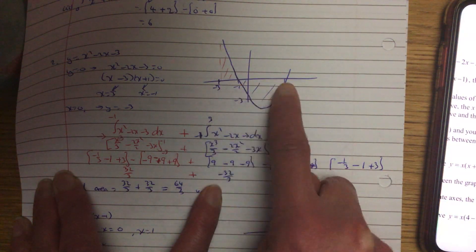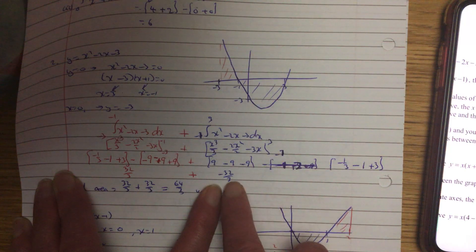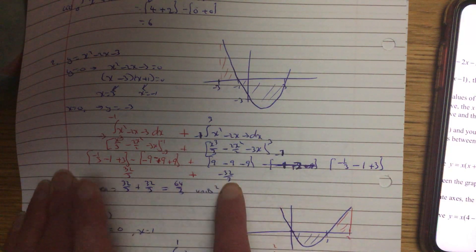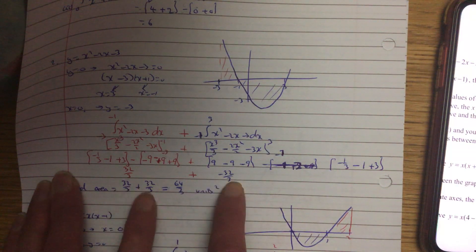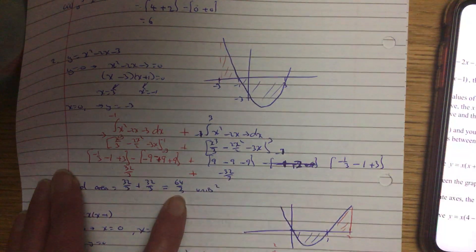Now, remember the blue is under the axis, and you're talking about the area, so you treat that as a positive value. So it's 32 over 3, add 32 over 3, 64 over 3 units squared.